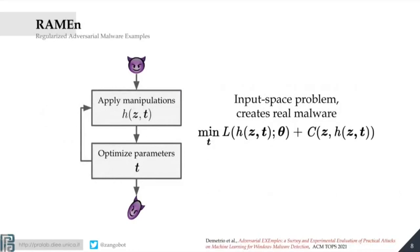Let's deep dive into these three concepts. What is this formalization, RAMEN — Regularized Adversarial Malware Examples? The name is nice, and then I created the acronym, as I think everybody does in science. The RAMEN formalization is made up of two main components: the manipulations, which are the objects I use to include things inside the program, and how you optimize the parameters.